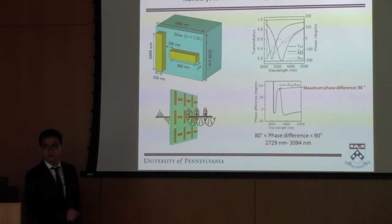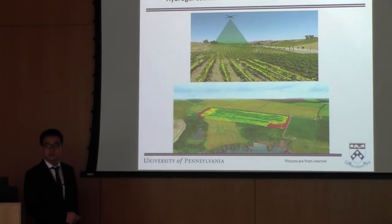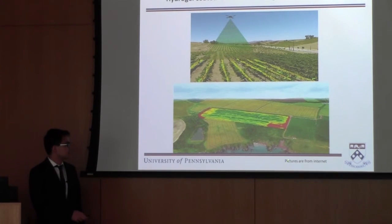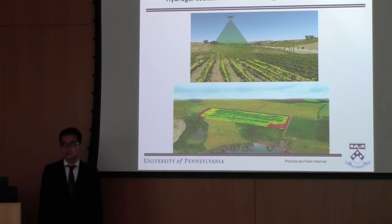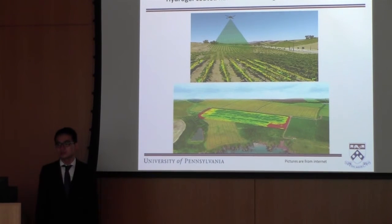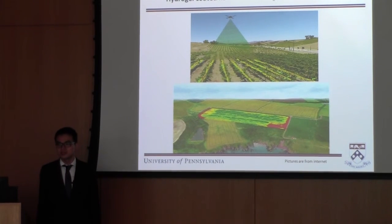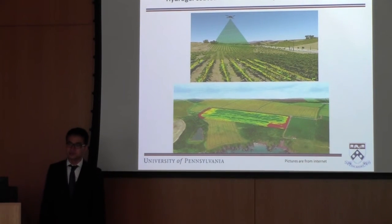Question about the optical measurement setup — referring to the last slide — is that a conceptual picture? Answer: This is a conceptual picture from a drone company that creates drones for agriculture. Question: Is this using gold? Answer: Yes, this uses gold. I haven't tried silver because silver oxidizes easily in air and it's difficult to control. Gold is a very stable material that people usually use in plasmonic devices.